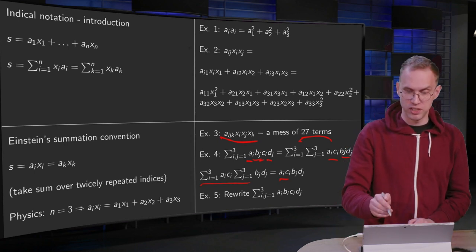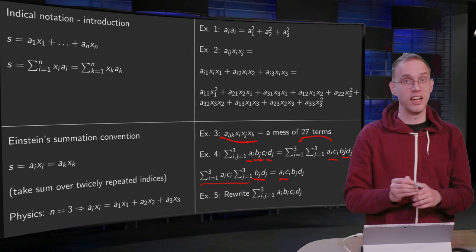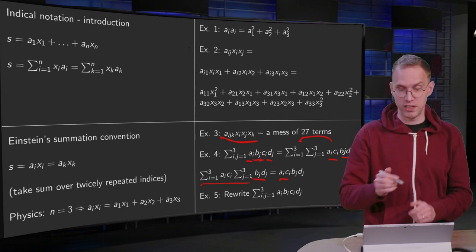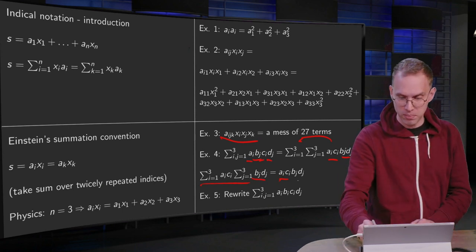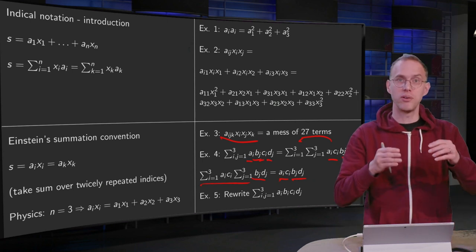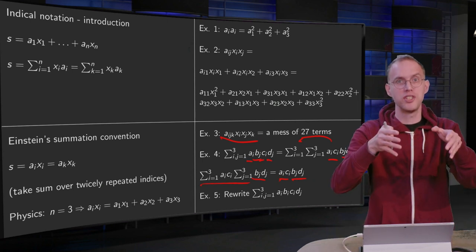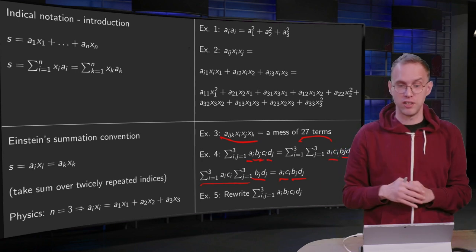And you have a sum j equals 1 to 3, bⱼdⱼ. And using the summation convention, you can scratch the sum, can be written as bⱼdⱼ. So this is how you can go from notation with sums to notation without sums.